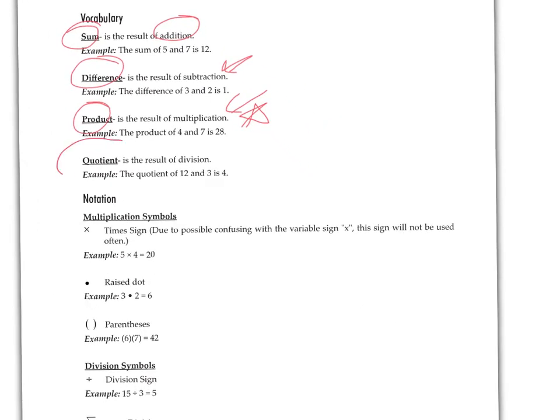The word quotient is a result of division. And you can see some examples right there in your book. The quotient of 12 and 3 is 4. If you were to write this into a math sentence, the quotient means you're dividing. What are you dividing? You're dividing 12 divided by 3, and that will equal 4.